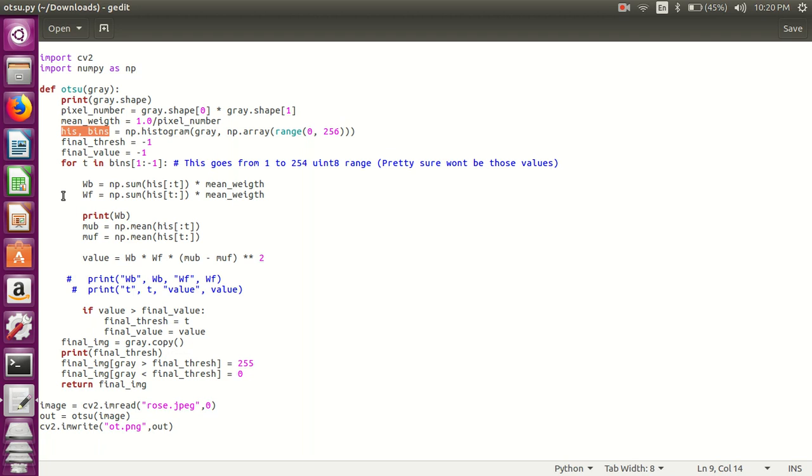Then the entire values are divided into a series of intervals, and then we count how many values fall into each interval. Then we are initializing the final_thresh and final_value. We are initializing both final_thresh and final_value as negative 1. Then for all bins, which is ranging from 1 to 254.